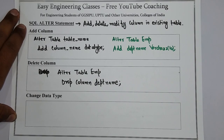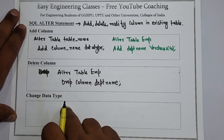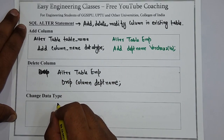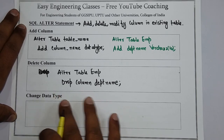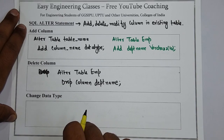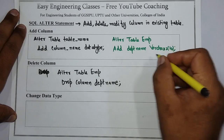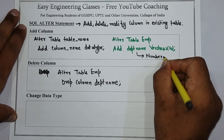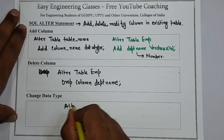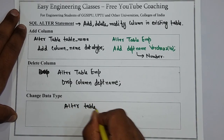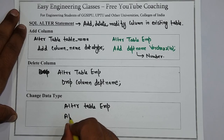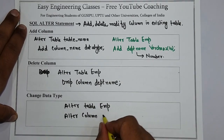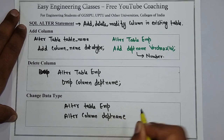The next example is to change the data type of a column. What we have to do is use ALTER TABLE, table name, then ALTER COLUMN, the column name, and its new data type. For example, if I want to change the data type to number, I write: ALTER TABLE EMP, ALTER COLUMN department_name, number.